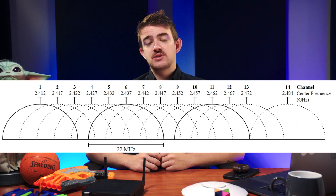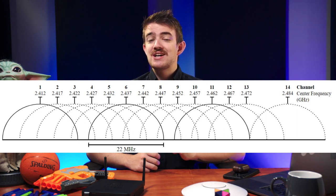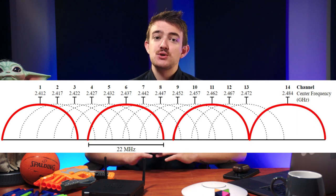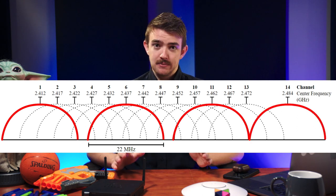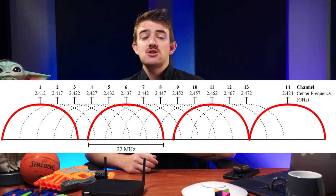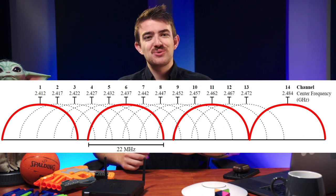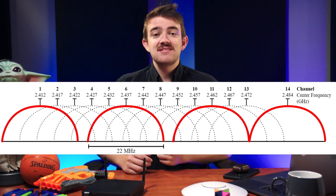There are 14 channels in the 2.4 GHz band. Note that channels 1, 6, 11, and 14 do not overlap. If you do the math, you'll quickly see that 14 channels of 20 MHz equals 280 MHz, which is greater than the 100 MHz size of the 2.4 GHz band — meaning that channels overlap. This is important because overlapping Wi-Fi channels can interfere with one another.